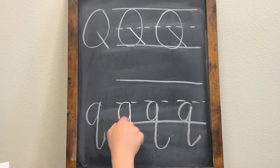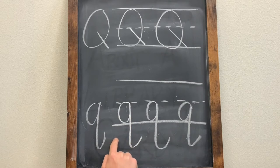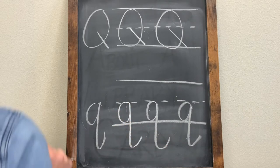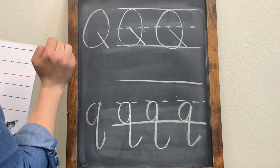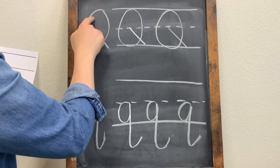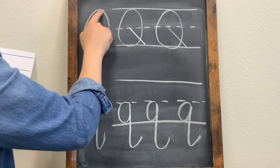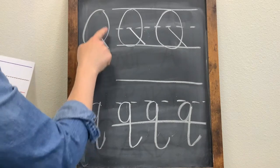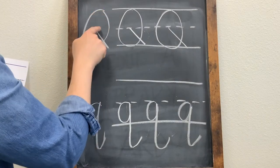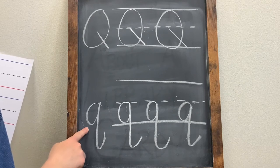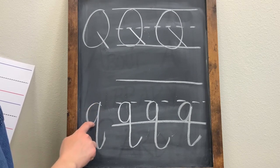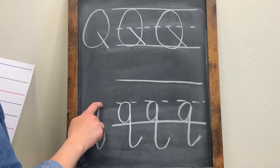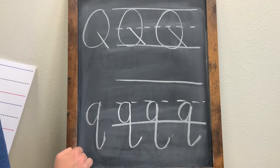This also looks almost like a lowercase letter G, except a lowercase letter G hooks to the left and a lowercase letter Q hooks to the right. For an uppercase letter Q, we're going to start at the top and come all the way around until we make a circle, then go halfway and touch the bottom line with the diagonal line. For a lowercase letter Q, we are going to make a circle halfway and go all the way down and hook it to the right.